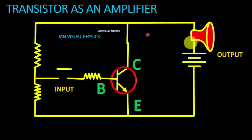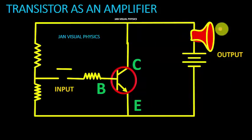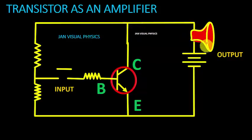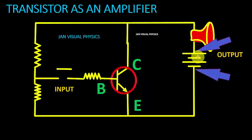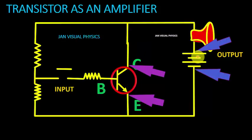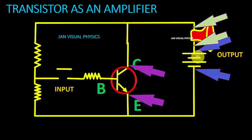This is an amplifier circuit in which a loudspeaker is our load. This speaker is connected to the source voltage through a transistor. The source voltage is divided across the transistor and our load.